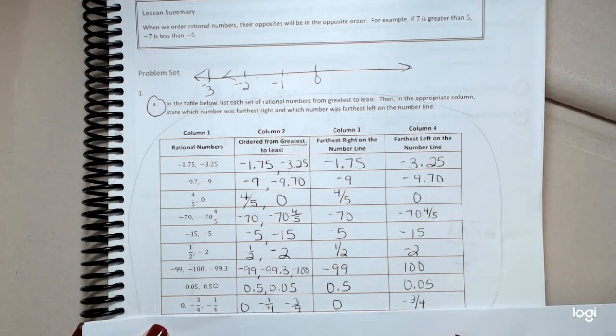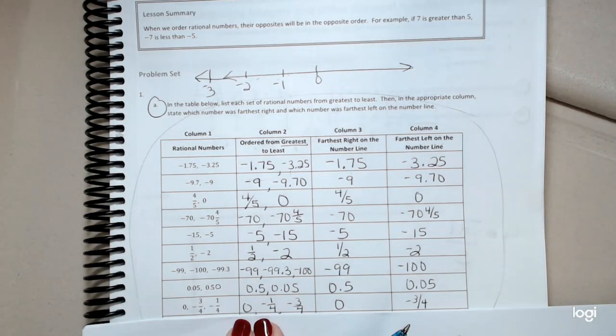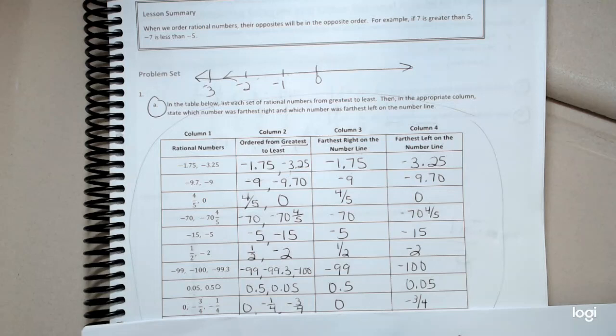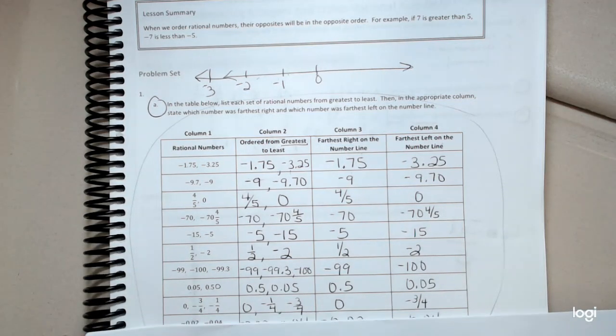Then I have zero, negative one-fourth, and negative three-fourths. Obviously, zero is larger than my negative numbers. Negative one-fourth is going to be here. Negative three-fourths would be here. So obviously, negative one-fourth is my larger number out of those two.